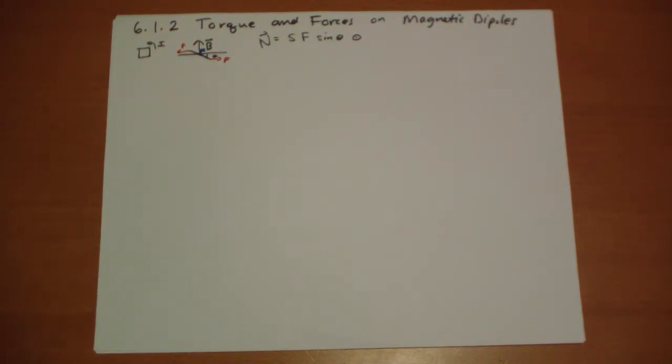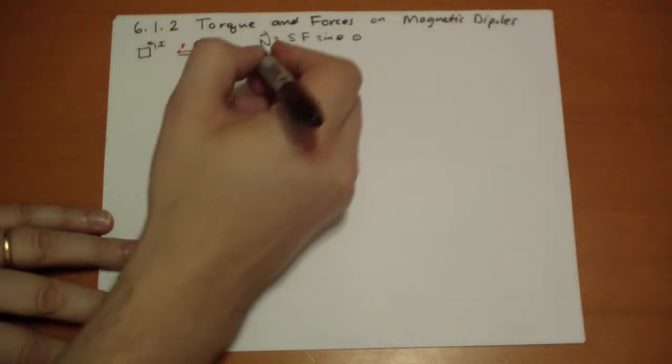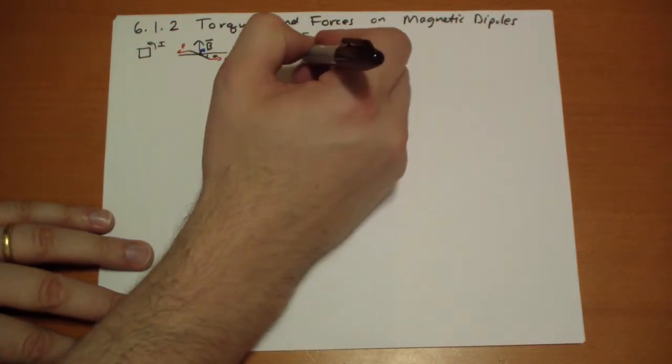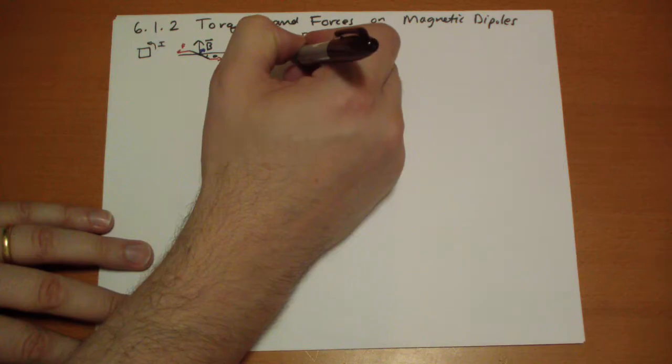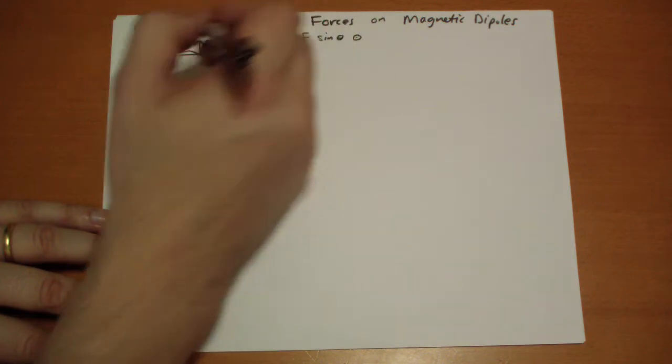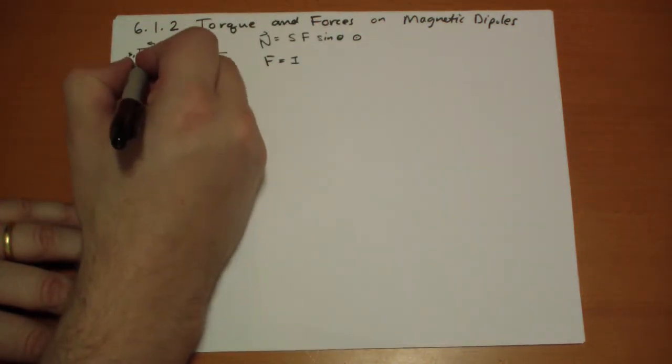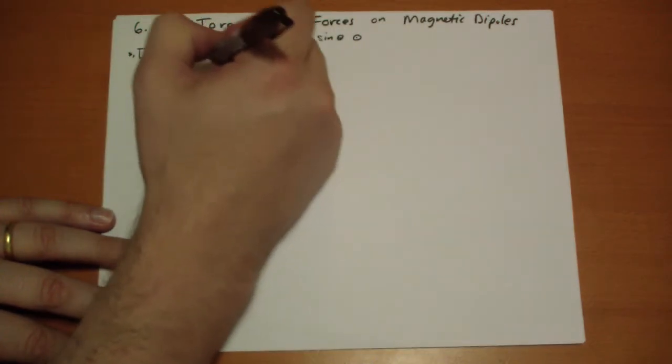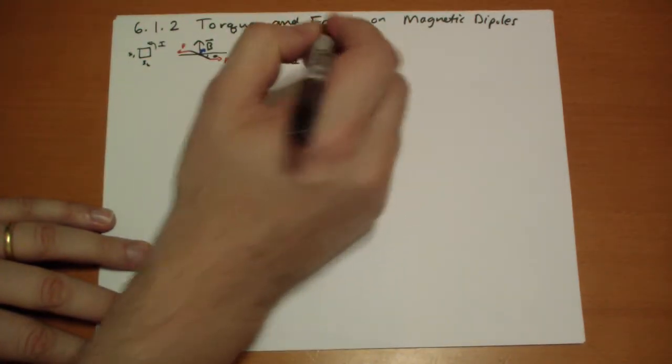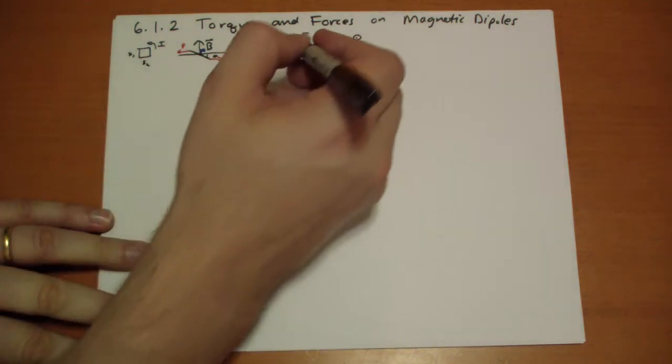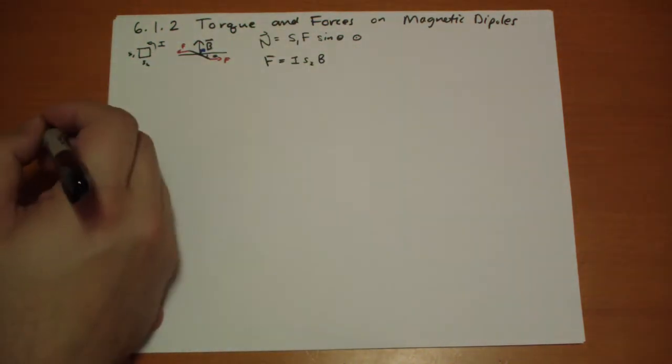And for the force, what's the force? Well that's just QV cross B, times the length there, so it's I times the length. Well here, what he does is he has, this one is like side one, and this one is side two. Side two is the length of it going into or out of the page. And then, it's the magnetic field B, that's the force there.